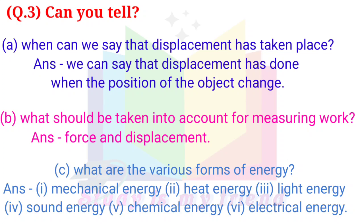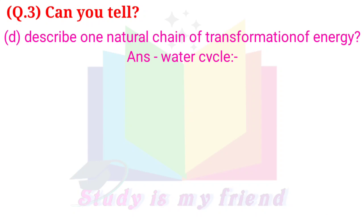C. What are the various forms of energy? Answer: 1. Mechanical energy, 2. Heat energy, 3. Light energy, 4. Sound energy, 5. Chemical energy, 6. Electrical energy.